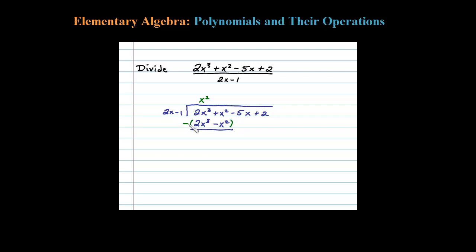When I subtract 2x cubed minus 2x cubed, that's going to be zero. But here when I subtract, it's really adding, because when I distribute the negative, that will be plus. So x squared plus x squared is 2x squared.